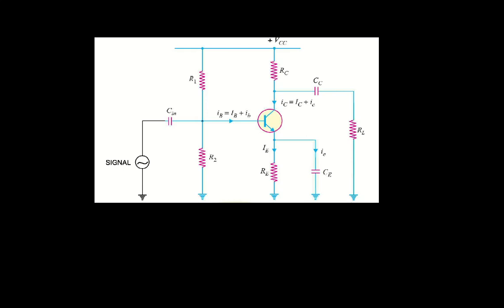In the last lecture we discussed about the DC equivalent circuit and a DC load line of a common emitter transistor amplifier. Now in this lecture we will discuss about the AC equivalent circuit of a common emitter transistor amplifier.